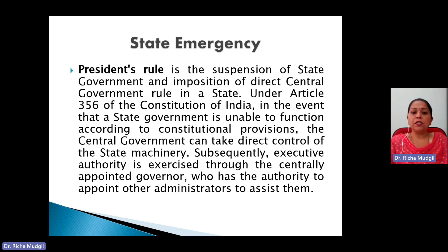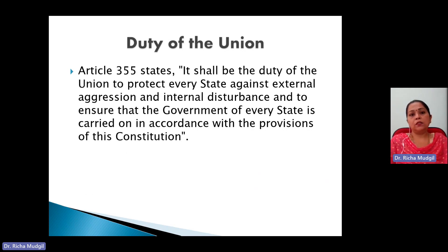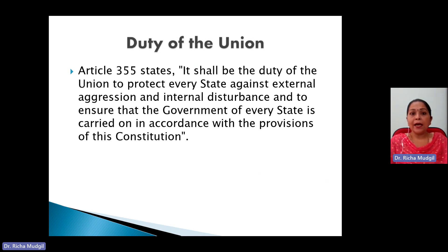As a result, the executive authority is exercised through the centrally appointed governor, who has the authority to appoint other administrators to assist him. Article 355 very clearly states that it shall be the duty of the union to protect every state against external aggression as well as internal disturbance, and to ensure that the government of every state is carried on in accordance with the provisions of the Constitution.